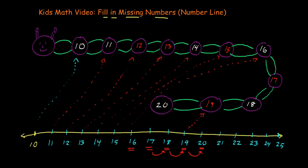But you can see you can keep going with the number line. So after 20, what comes next? 21. And after 21, what comes next? 22. And after 22? 23. And after 23? 24. And what comes next after 24? 25. And we're going to stop here at 25. We did it — you can even keep going, because the number line keeps going forever.